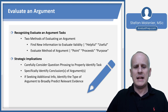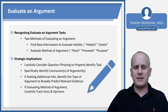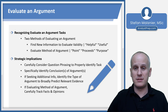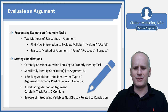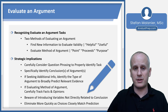You'll want to specifically identify the conclusion, or potentially multiple conclusions if you have multiple speakers. If you're seeking additional information to evaluate the argument, identify the type of argument to broadly predict what relevant evidence might be. If you're evaluating the method of argument and how it reaches its conclusion, carefully track the facts and opinions as premises and conclusions. Be aware of introducing variables not directly related to the conclusion, and eliminate more quickly when choices closely match a prediction.